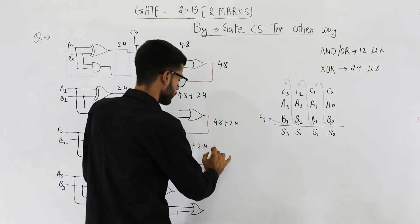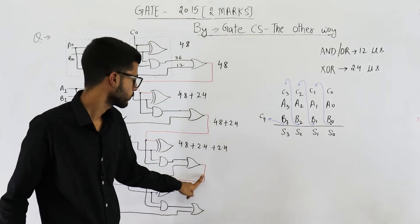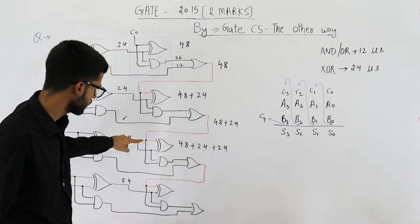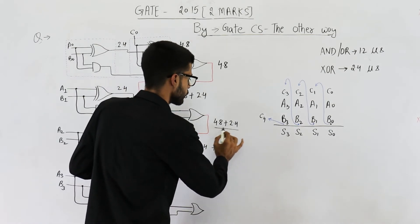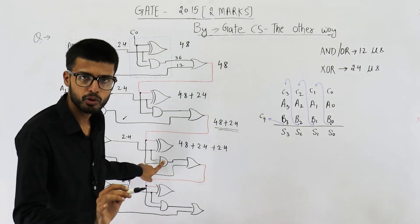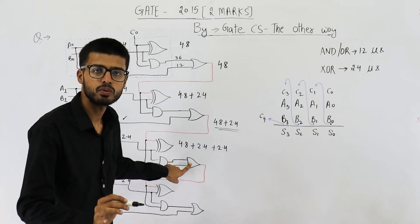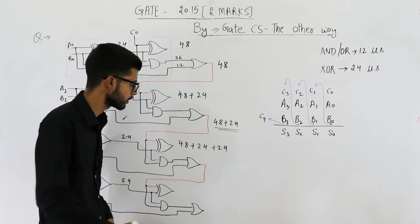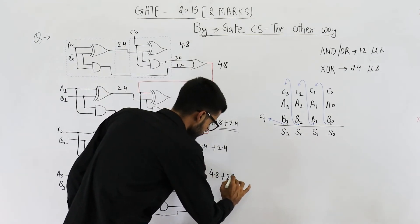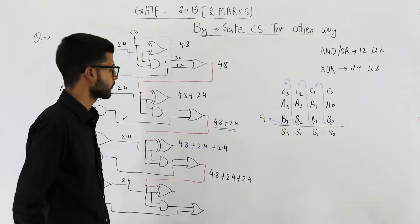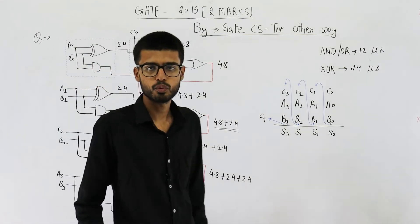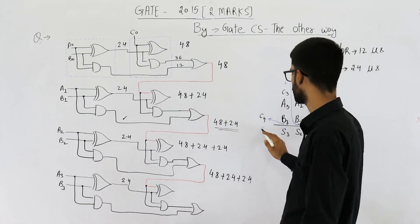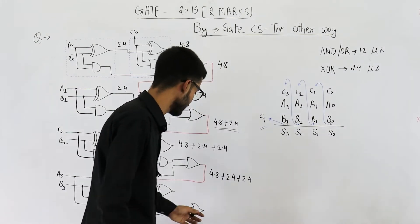The carry out of stage two takes an additional 2.4 microseconds beyond 4.8. For stage three, this input is available after 4.8 + 2.4 microseconds, and the gates take an additional 1.2 + 1.2 = 2.4 microseconds, so total is 4.8 + 2.4 + 2.4. Similarly, this stage also takes an additional 2.4 microseconds. The final carry C4 also takes additional 2.4 microseconds only.